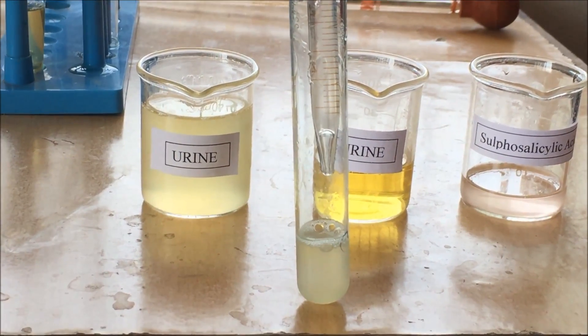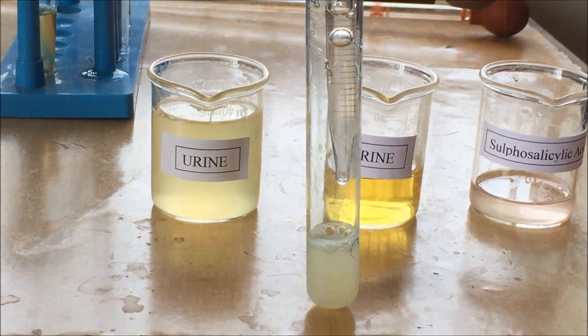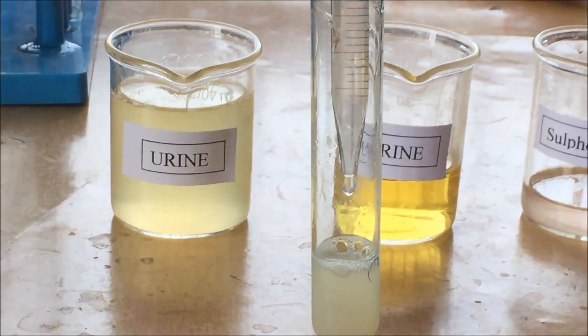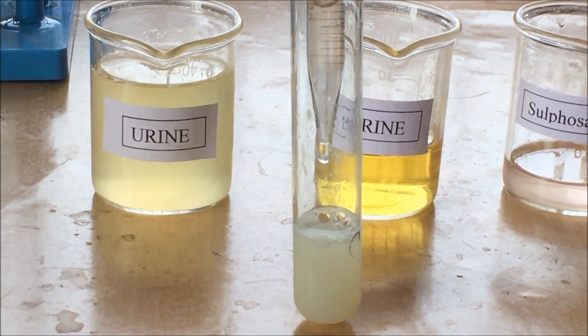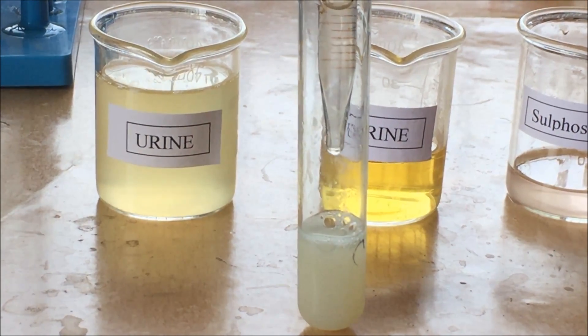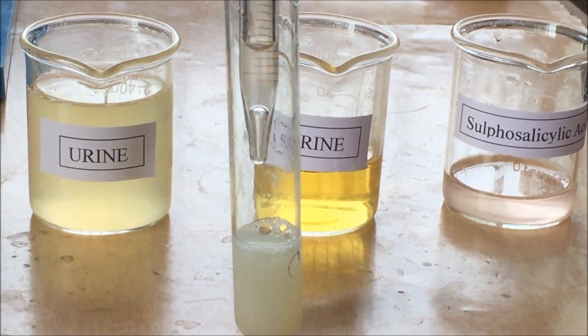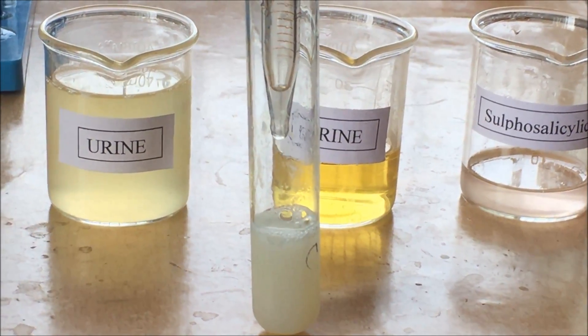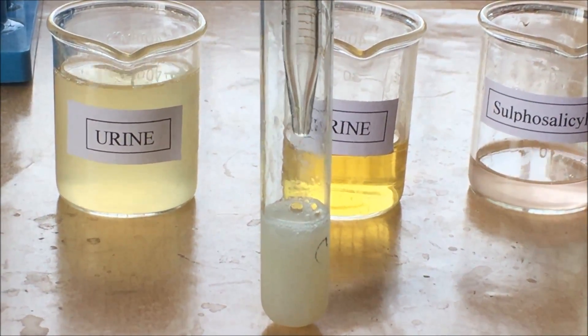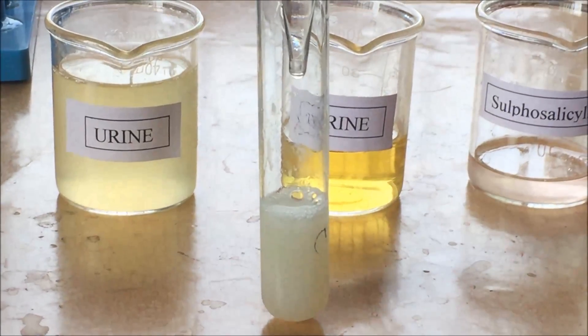Now clearly observe the change in color of the urine mixture. This is changing to slight cloudiness, slight turbidity. When we increase the drops of sulfosalicylic acid, the turbidity increases respectively. The change in turbidity indicates the presence of albumin in the given sample of urine. Here the sample was egg albumin, water, and urine. Thus it confirms the presence of albumin in the prepared mixture.